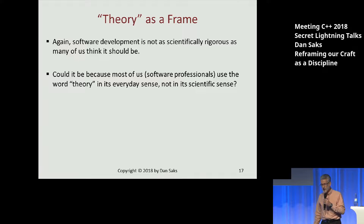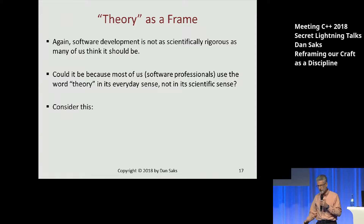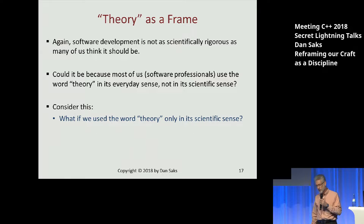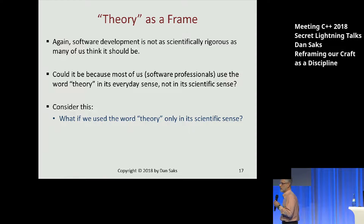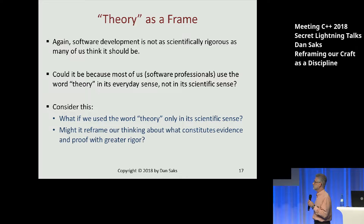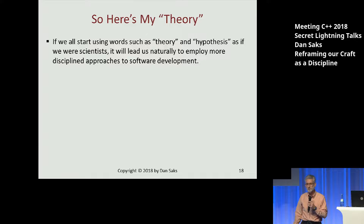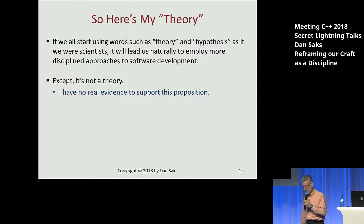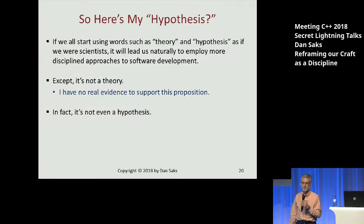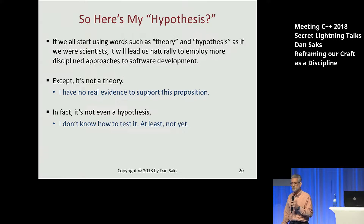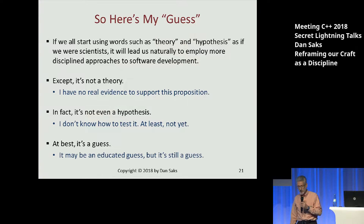What I'm suggesting is that let's think about how we use that word. What if we said henceforth we're going to use the word 'theory' only in its scientific sense? What would that do to the way we talk about our craft, about what we know to be true, what we can verify? Might it not inject some additional rigor? So, here's my theory: if we all start using words such as 'theory' and 'hypothesis' as if we were scientists, it will lead us naturally to employ more disciplined approaches to software development. Except — it's not a theory. I have no evidence to support it. In fact, it's not even a hypothesis, because I don't know how to test it. At best, it's a guess. It's an educated guess, but it's a guess.